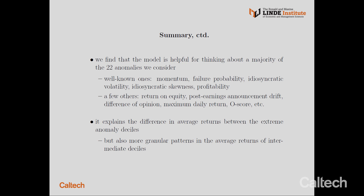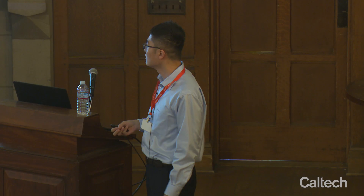For example, some very well-known anomalies like momentum, distress, idiosyncratic volatility, idiosyncratic skewness, and profitability — but also quite a few others like return on equity, post-earnings announcement drift, difference of opinion, whole score, and so on. Moreover, for several of these anomalies, the model explains not only the difference in average returns between the extreme deciles — decile 1 and decile 10 — but also more granular, more specific patterns in the average returns of intermediate deciles.